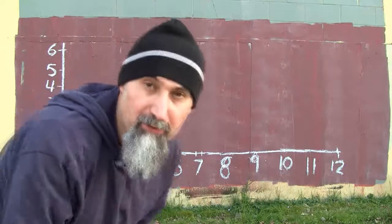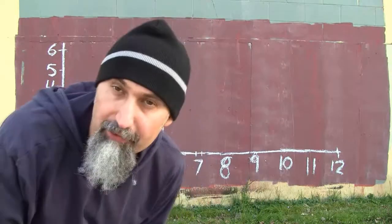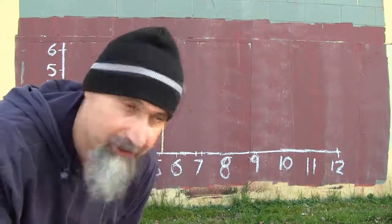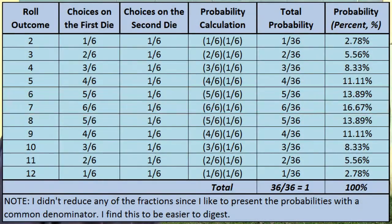For number six, there are five different combinations. For number seven, there are six different combinations.